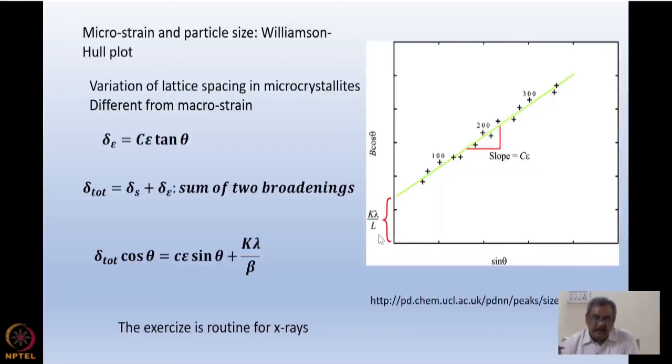The intercept gives me K λ / β. That means I can obtain from this Williamson-Hull plot the value of the microstrain ε from this plot, and also the particle size using Williamson-Hull plot. You can see here actually various intensity of various Bragg peaks have been plotted against sin θ. This plot gives me strain as well as particle size in one go. But this is not microscopic, and there are other more elaborate theories which I will refrain from discussing now.